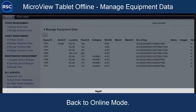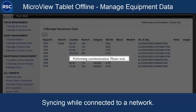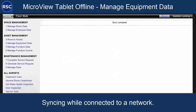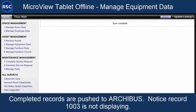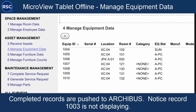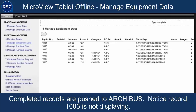I'll go ahead and turn the Wi-Fi back on. It's performing a synchronization again, this time finding the server and pushing that data up. We've synced it completely. We're going to go back to manage equipment data, and you'll notice that the 1003 item has disappeared from our list. That's because that record has been pushed back to the server.